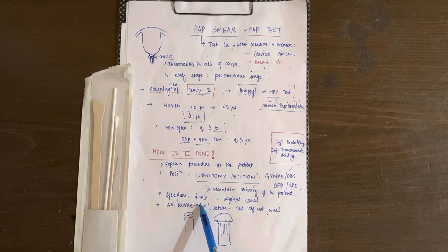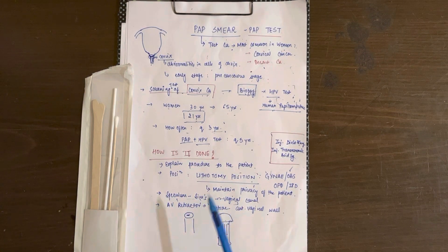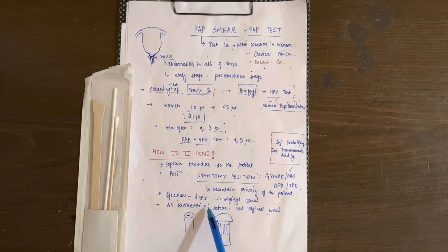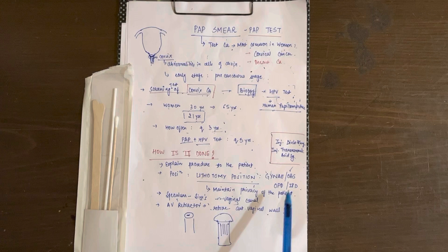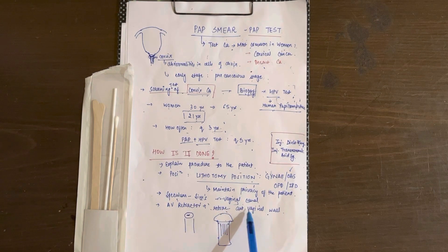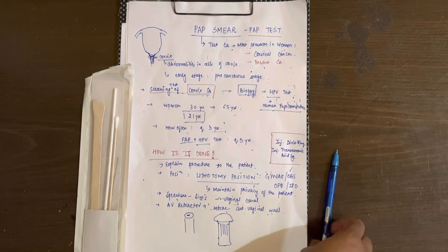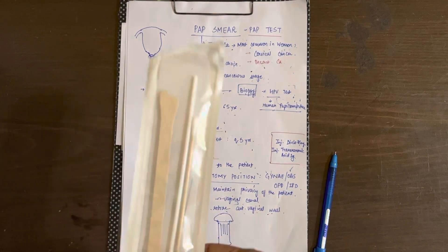We are going to insert the Sims speculum, or alternatively many gynecologists use Cusco's speculum as well, to visualize the vagina or the mouth of the cervix, the external os. You need an AV retractor to retract the anterior vaginal walls. This is the Pap kit that is used.